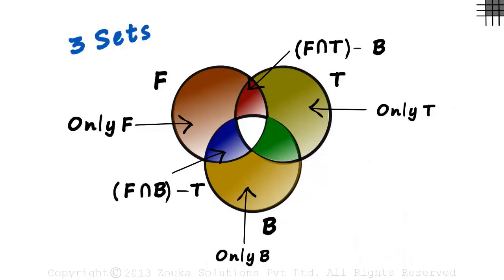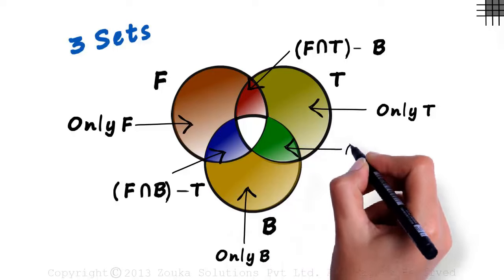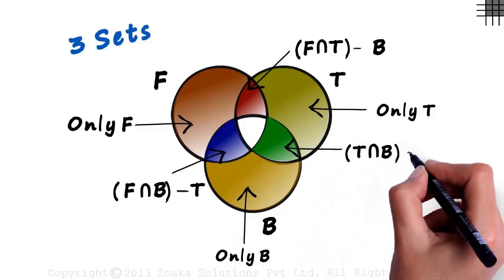And what about this green region? It will be T intersection B minus F.